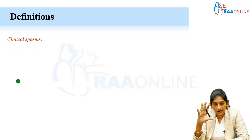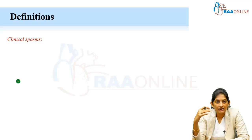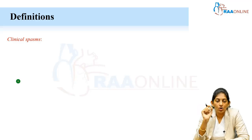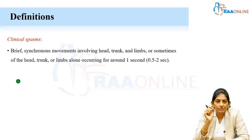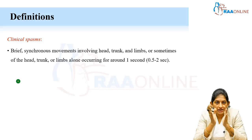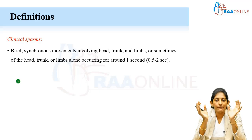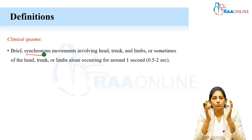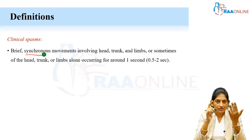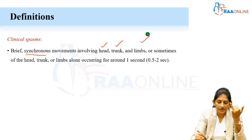Now we will define the clinical spasms before moving on to etiology. What are clinical spasms? A spasm is defined as a brief movement — very short — that is a synchronous movement involving synchronously the head, trunk, and limbs.